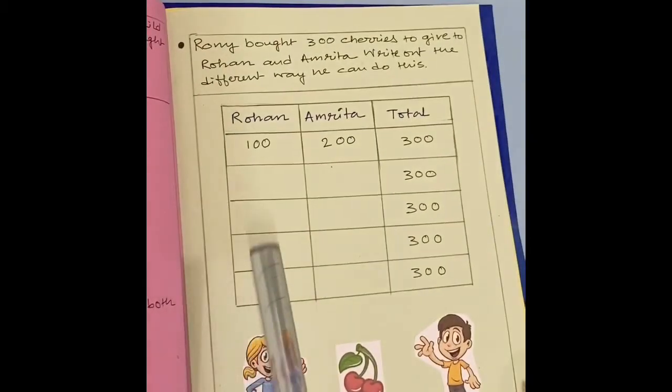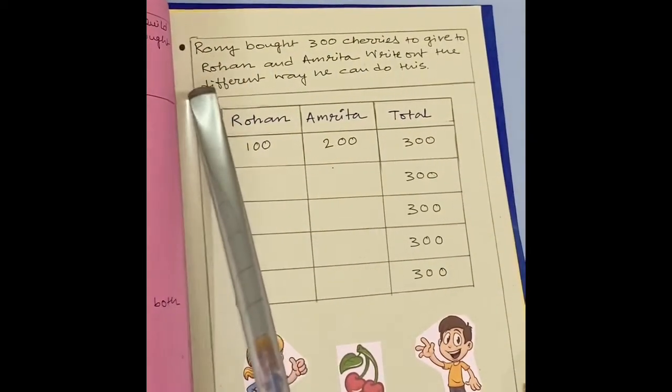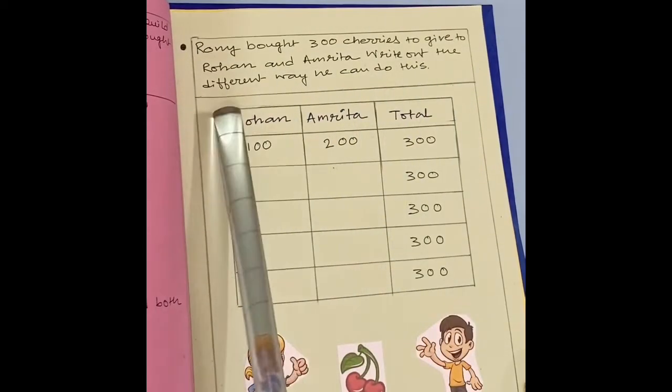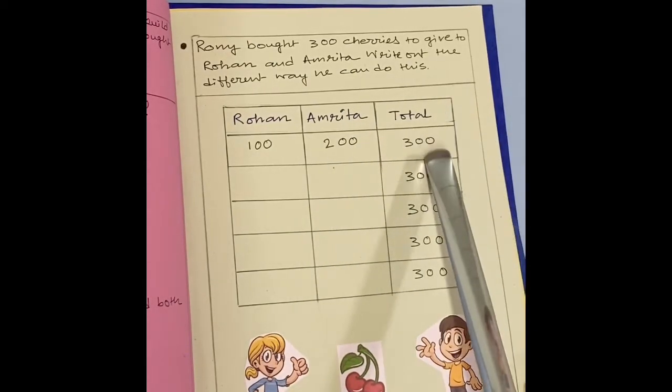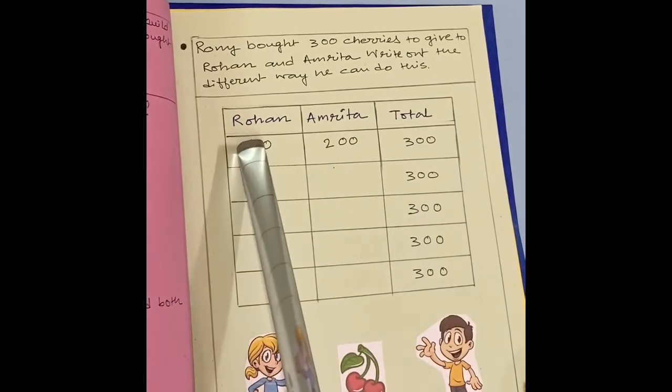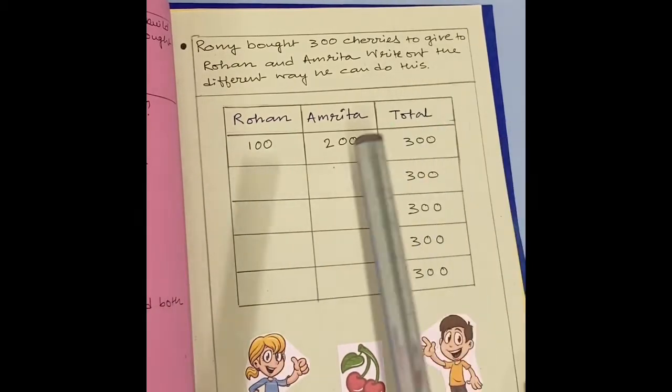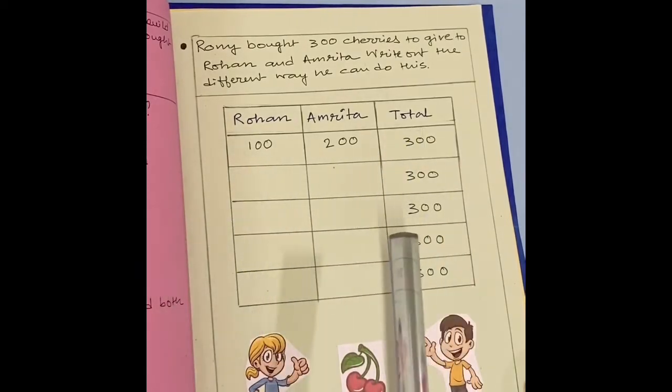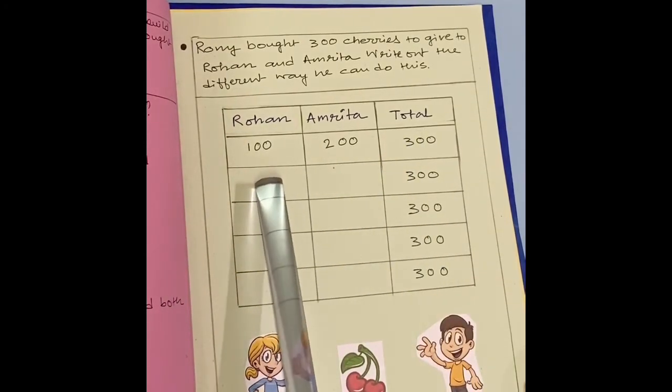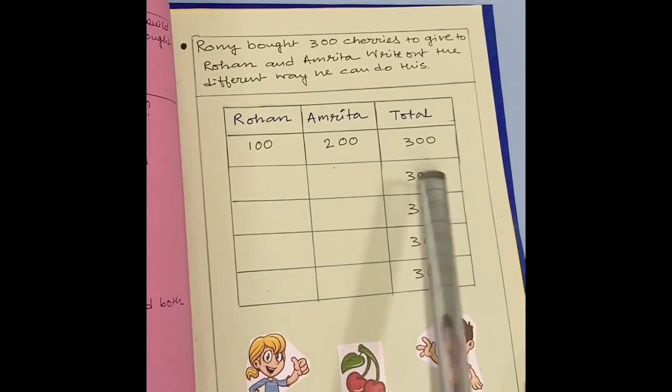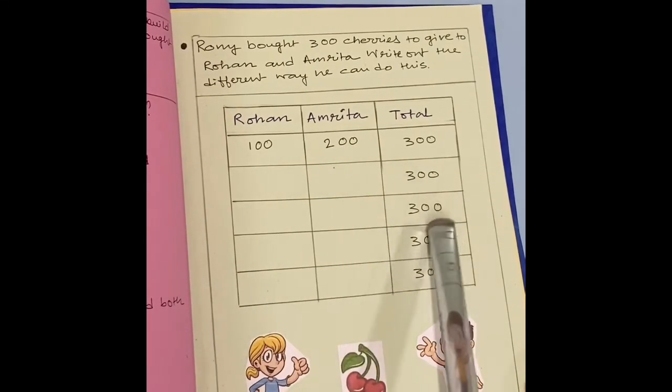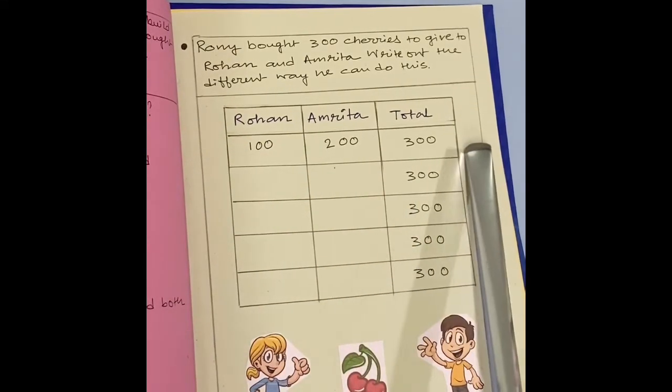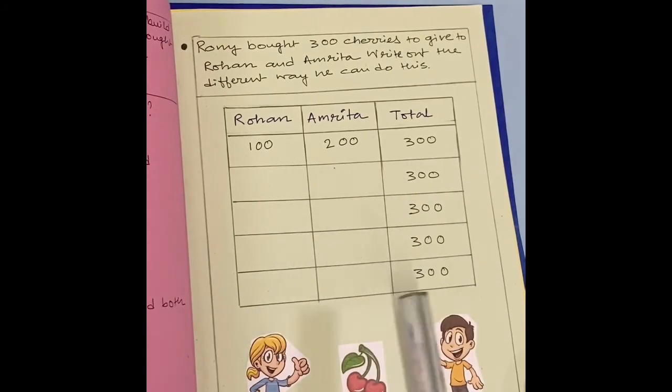Now, the last one. Here is also a story sum. Ronnie bought 300 cherries to give Rohan and Amrita. Write out the different way he can do this. So, this is the total. That is 300. Here, if I give 100 to Rohan and 200 to Amrita, then the total number is 300. I can give in different way. Like, if I give 200 to Rohan and 100 to Amrita, that is also 300. If I give 150 to Rohan and 150 to Amrita, that is also total make 300. So, like this way you have to solve. I have already done one for you and you have to do the rest yourself.